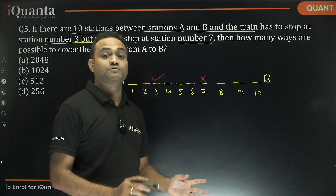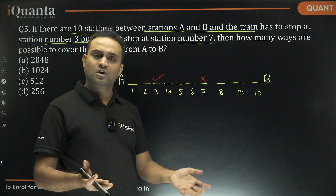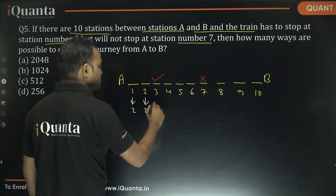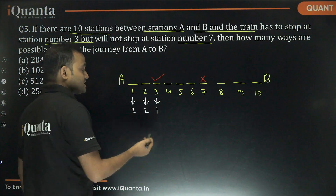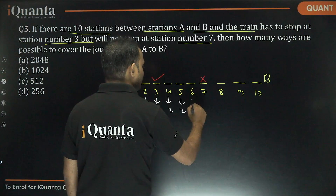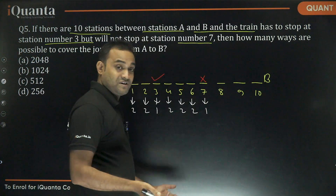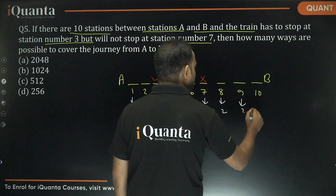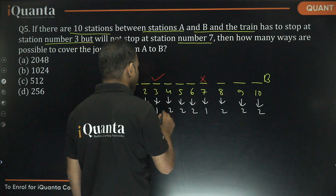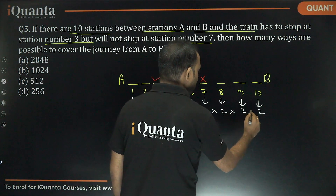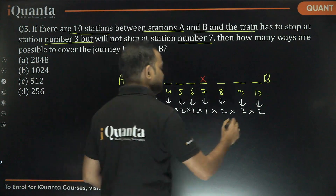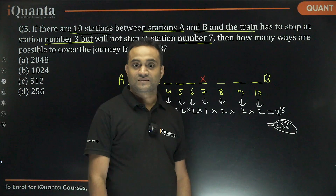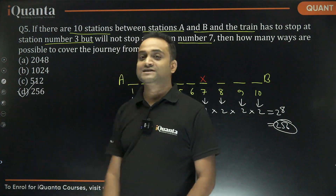For the remaining 8 stations (1, 2, 4, 5, 6, 8, 9, 10), the train can either stop or not stop — two options each. So the total number of ways is 2 to the power 8, which equals 256. Option D is the correct answer.